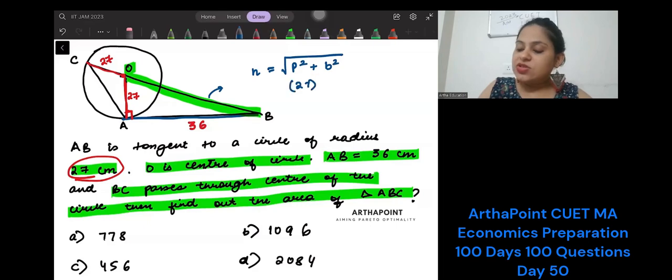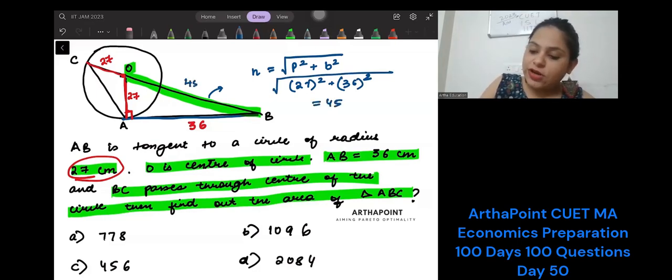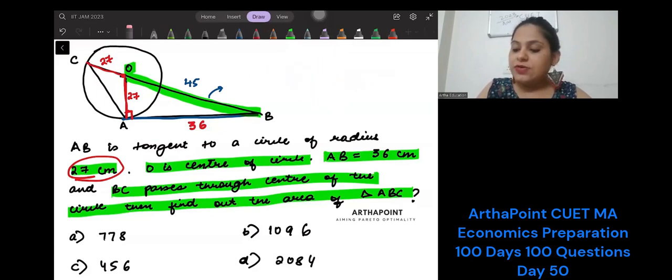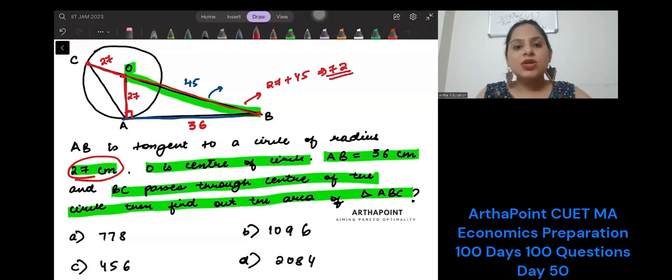Now let's think about OB. I can use Pythagoras theorem. OB is hypotenuse. It is perpendicular squared plus base squared under root. Perpendicular is 27 squared plus 36 squared under root. This is 45. So my OB will be 45. If OB is 45 and OC is 27, what is going to be CB? CB is just going to be 27 plus 45, which is 72.